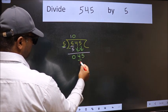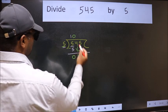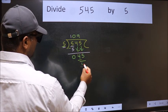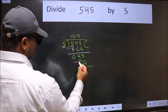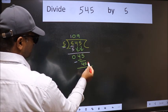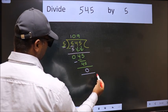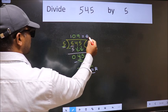Now 45. When do we get 45 in 5 table? 5 nines 45. Now we should subtract, we get 0. No more numbers to bring down, so we stop here. This is our remainder and this is our quotient.